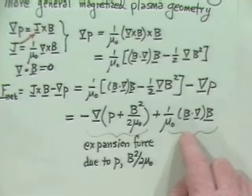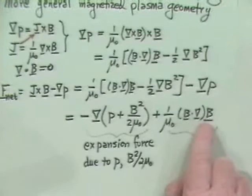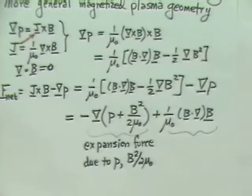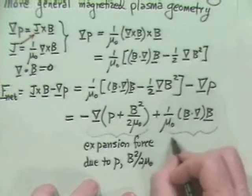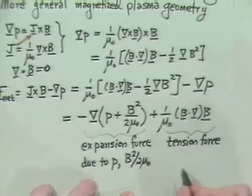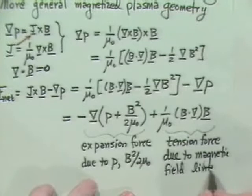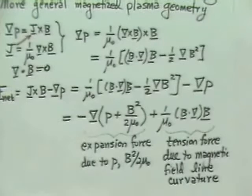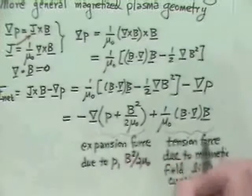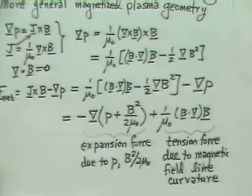This one is nominally a positive force. And what does it represent? Well, it's effectively the tension of the field lines because of their magnetic field line curvature. This is the tension force due to magnetic field line curvature. So if we want an equilibrium, we have to get those two forces to balance in all directions, along the magnetic field, perpendicular to the magnetic field, and so on.